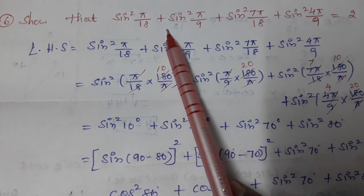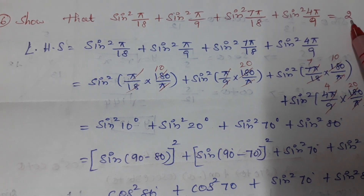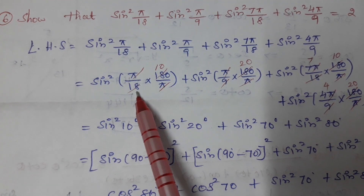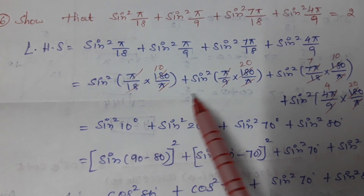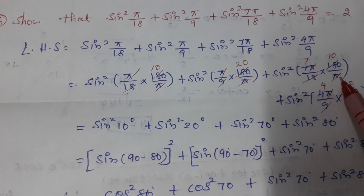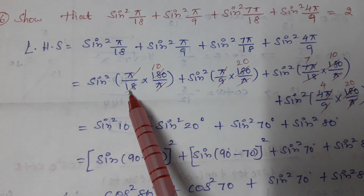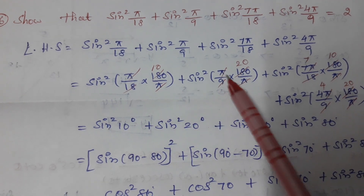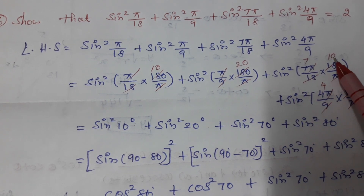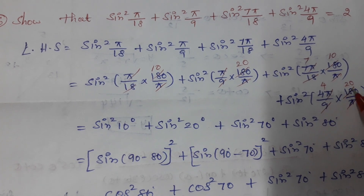Question 6: Show that sin²(π/18) + sin²(π/9) + sin²(7π/18) + sin²(4π/9) = 2. Converting each term by multiplying by 180/π: π/18 → 10°, π/9 → 20°, 7π/18 → 70°, 4π/9 → 80°. So we get sin²10° + sin²20° + sin²70° + sin²80°.